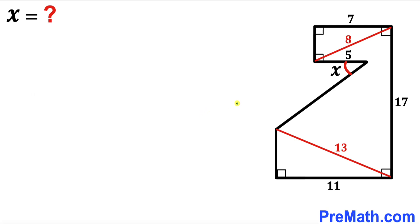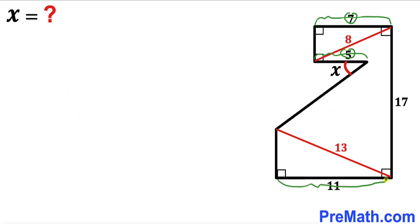Welcome to pre-math. In this video we have got this interesting polygon as you can see in this given diagram, such that the horizontal side lengths are 7 units, this side length is 5 units, and finally this horizontal length is 11 units.